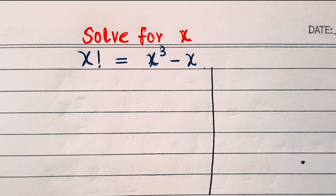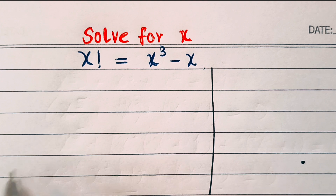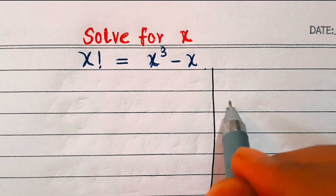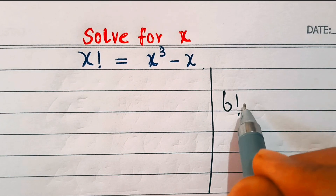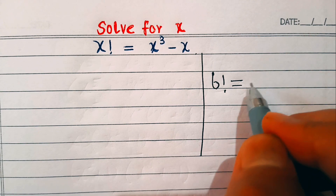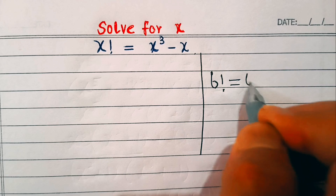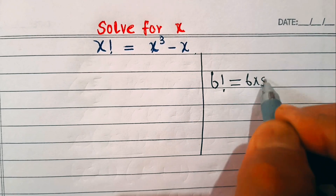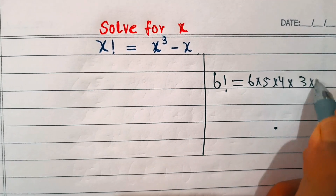Factorial multiplies a number by every number less than it, down to one. If we take the example of six, six factorial is the representation of the multiplication of six into five into four into three into two.